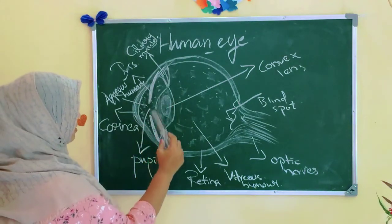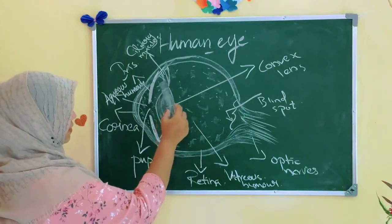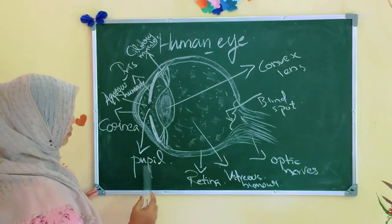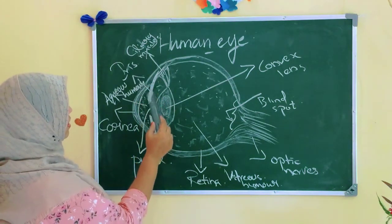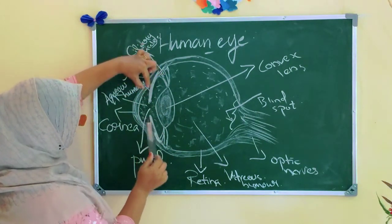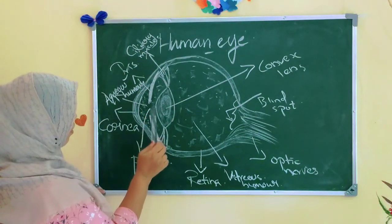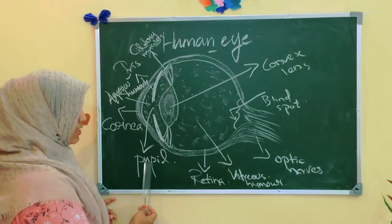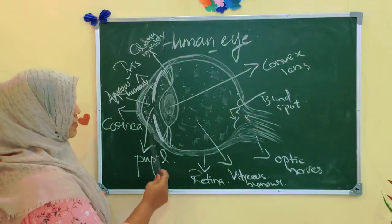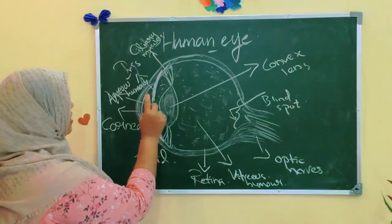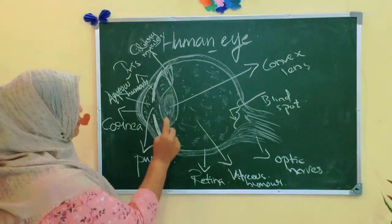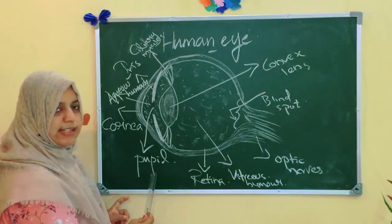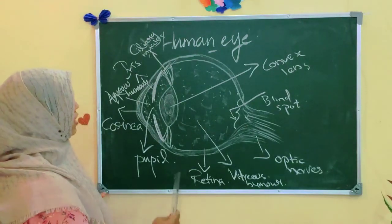The iris is a circular diaphragm with a hole at its center, and this hole is known as the pupil. The iris controls the size of the pupil. The pupil's function is to control and regulate the amount of light entering into the eye. The iris can contract or expand to adjust the pupil size.